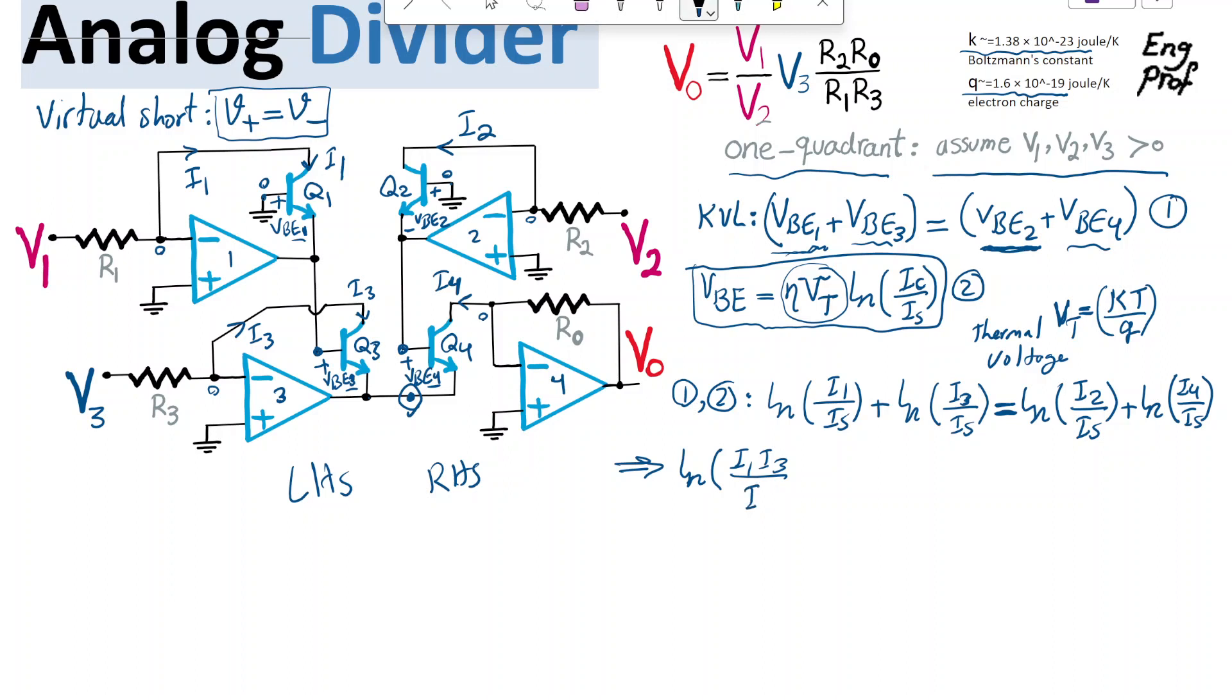so they are in the same substrate, in the same package, so we can make the rudimentary assumption that IS is the same for these transistors, so we have ln I2, I4 divided by IS squared. So obviously,